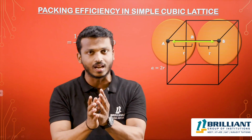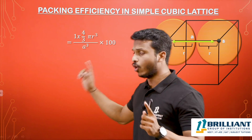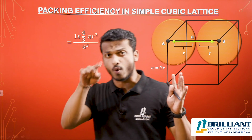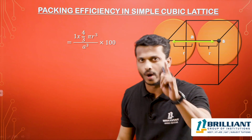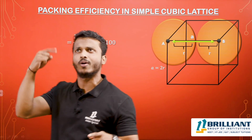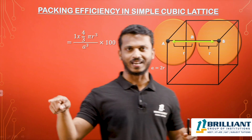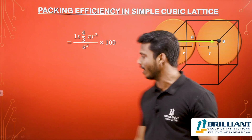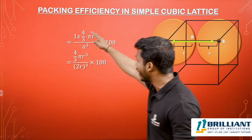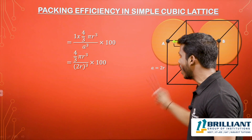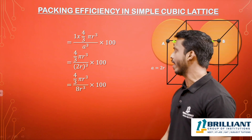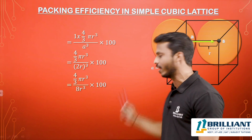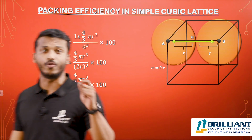Therefore, the total volume of spheres in a simple cubic unit cell = 1 × (4/3)πr³. The denominator is the total volume of the unit cell, which is a³. Since a = 2r, we substitute: (4/3)πr³ divided by (2r)³ = (4/3)πr³ divided by 8r³. The r³ terms cancel, and substituting the value of π gives a constant value of 52.4%.